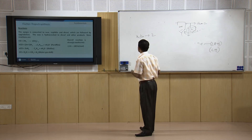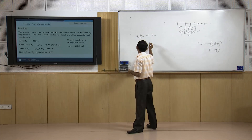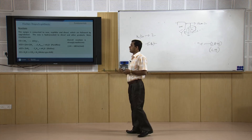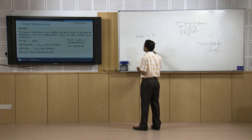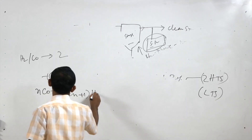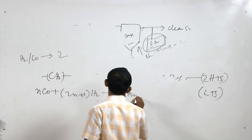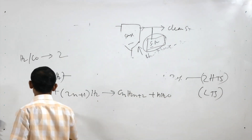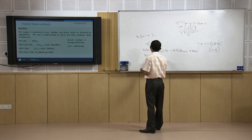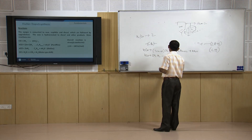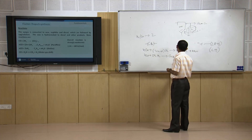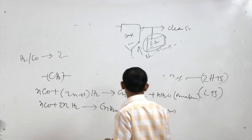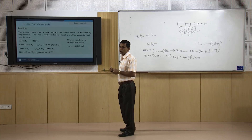The basic reactions in FT synthesis are: CO + 2H2 → –CH2– (a building block), giving paraffins and olefins — paraffins being wax. For paraffins: nCO + (2n+1)H2 → CnH(2n+2) + nH2O. For olefins: nCO + 2nH2 → CnH2n + nH2O. Shift reactions also take place in this reactor.